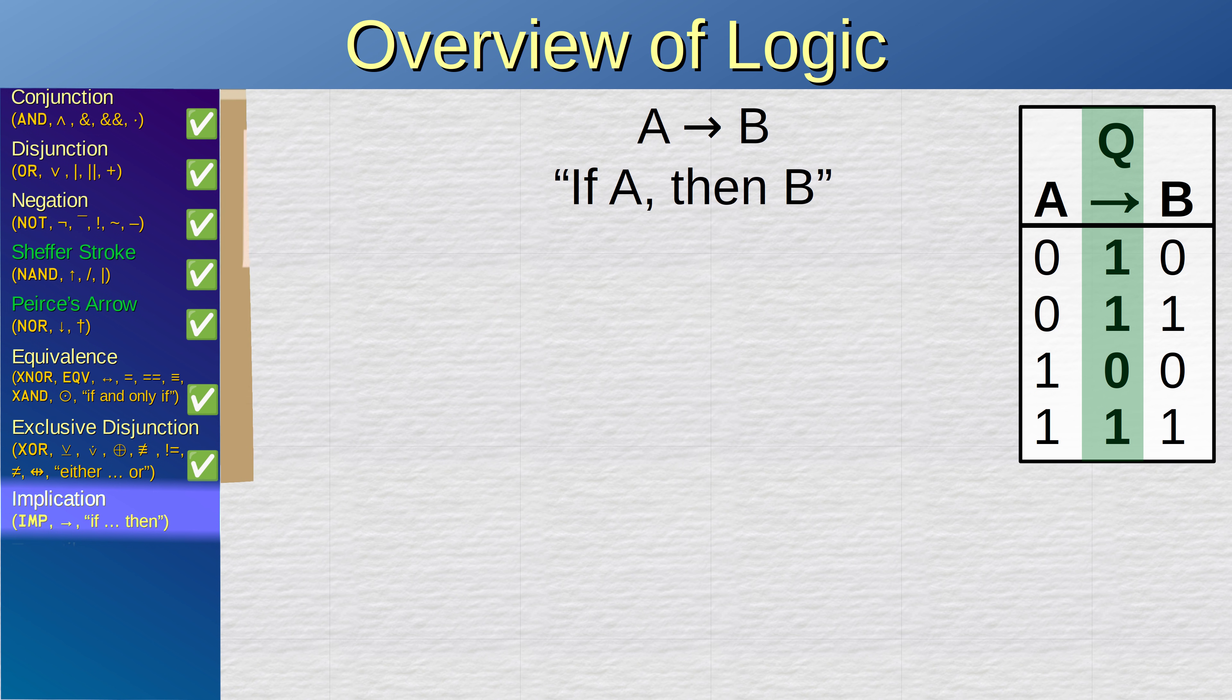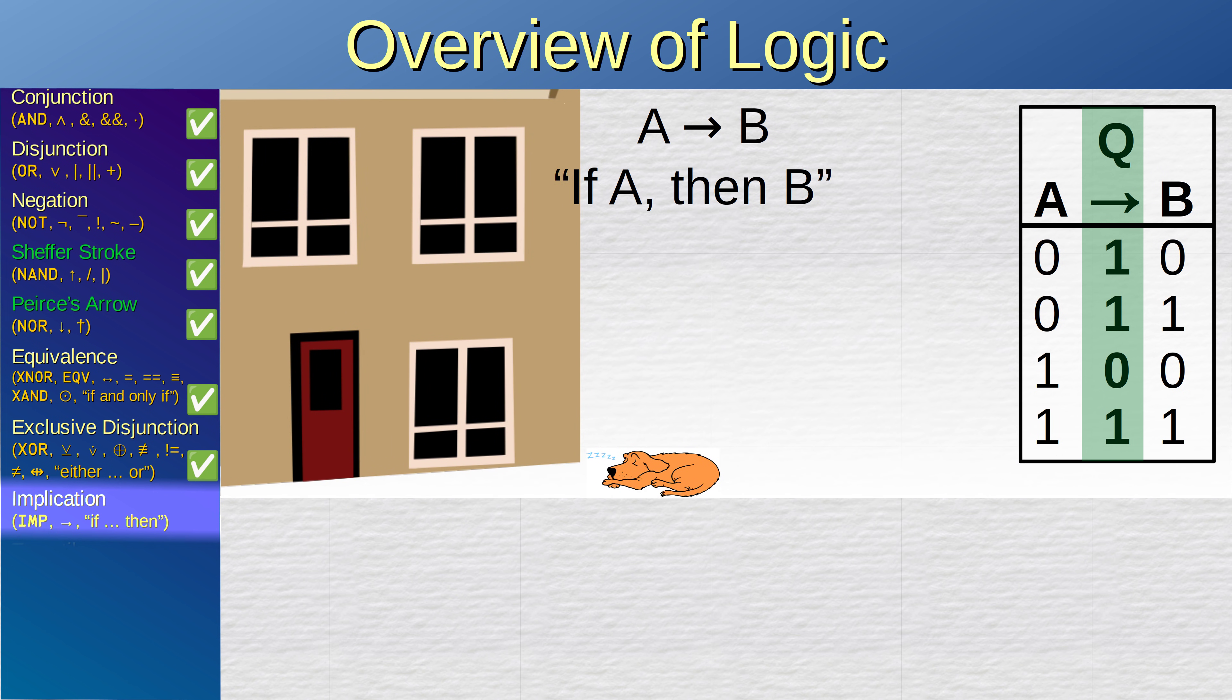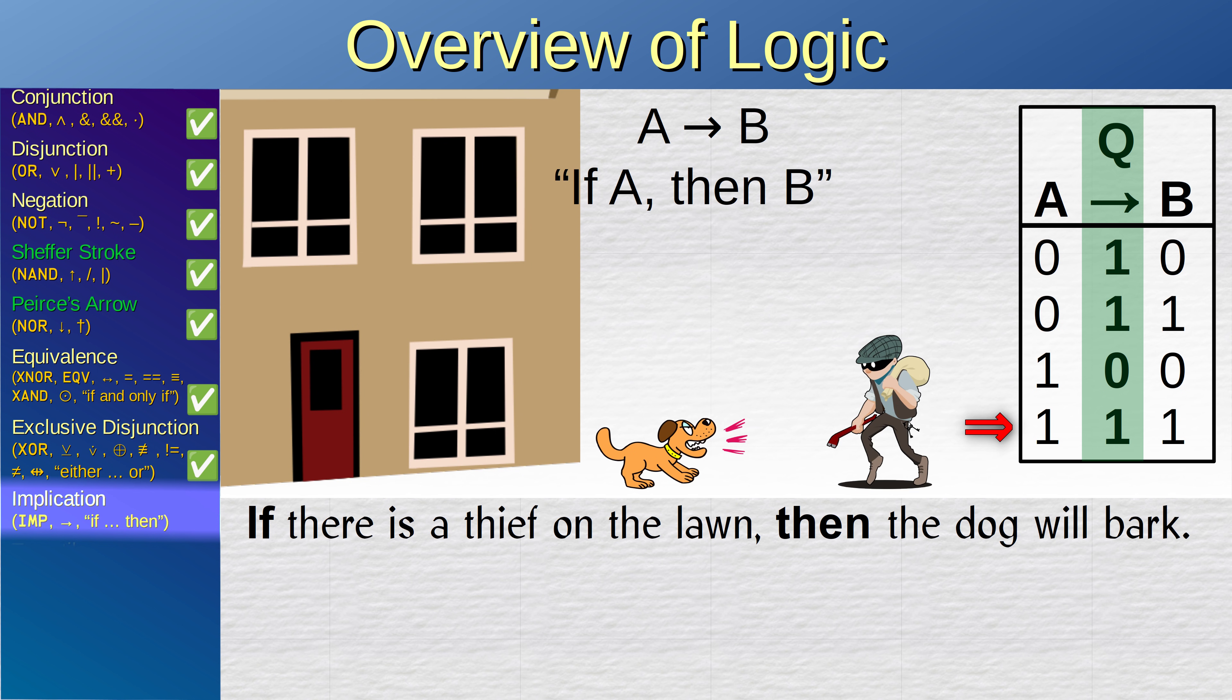Suppose you have a house and you have a dog. Now let's make a proposition. If there is a thief on the lawn, then the dog will bark. Now suppose that the thief is approaching your house. Will the dog bark? Of course the dog will bark. But what if the dog does not bark? It is impossible. The dog will bark if there is a thief on the lawn. The combination of a thief on the lawn and the dog not barking is impossible. Now suppose there is no thief. What if the dog barks? That might happen. The dog might still bark, because that's what dogs do. How about if the dog does not bark? That is also possible. The dog might not feel like barking. Most dogs do not bark all day.